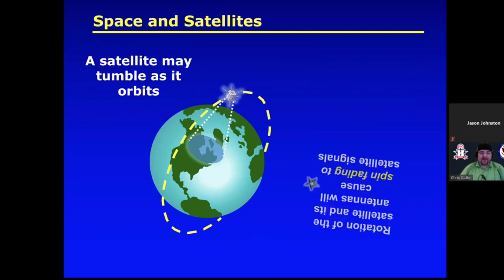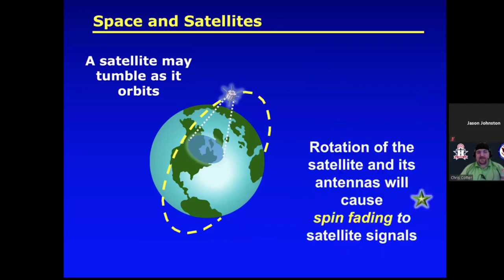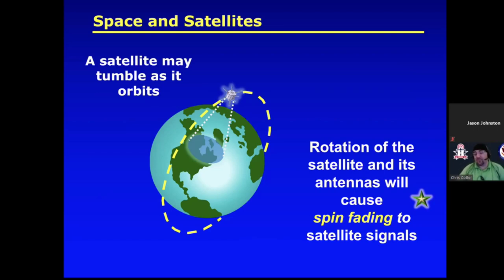As a satellite passes by, it may not be a smooth pass — it may be tumbling or spinning. Rotation of the satellite and its antennas will cause spin fading, where the signal quickly fades in and out as it spins.